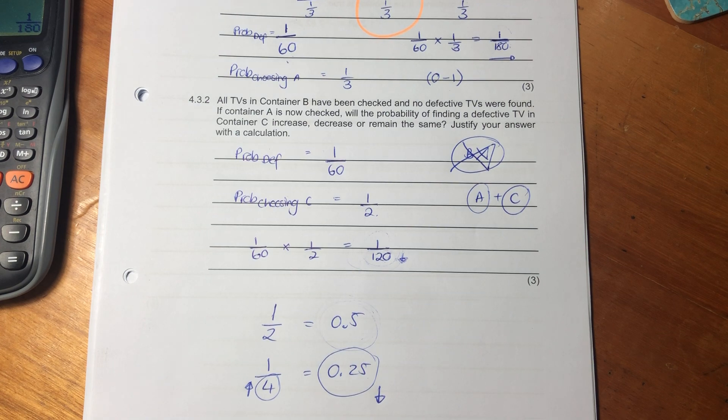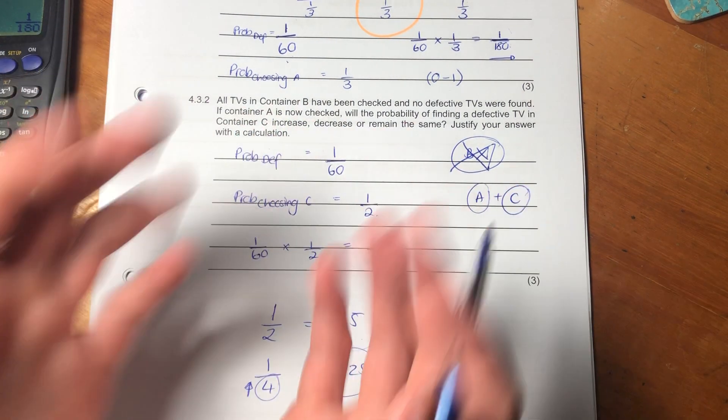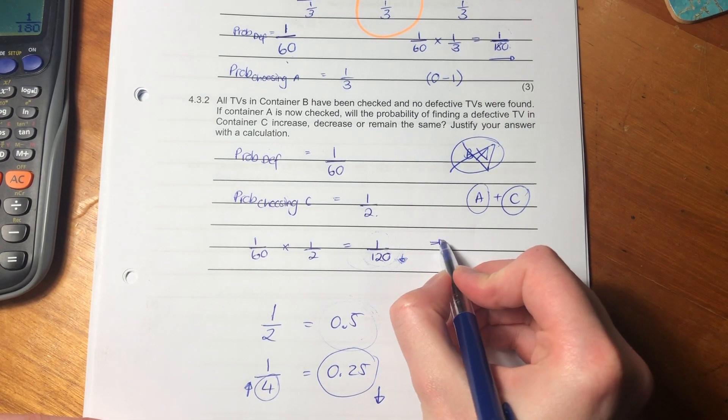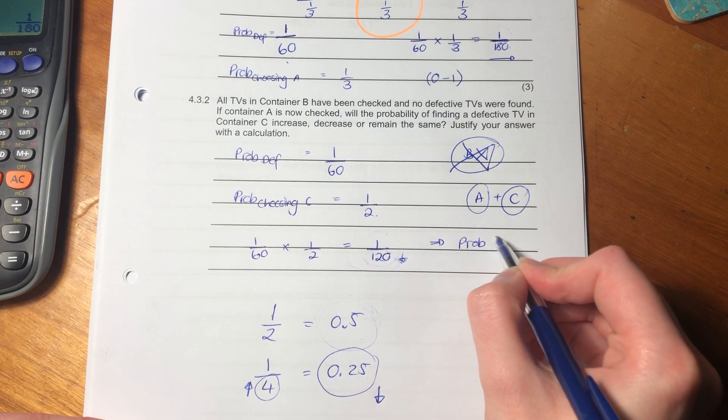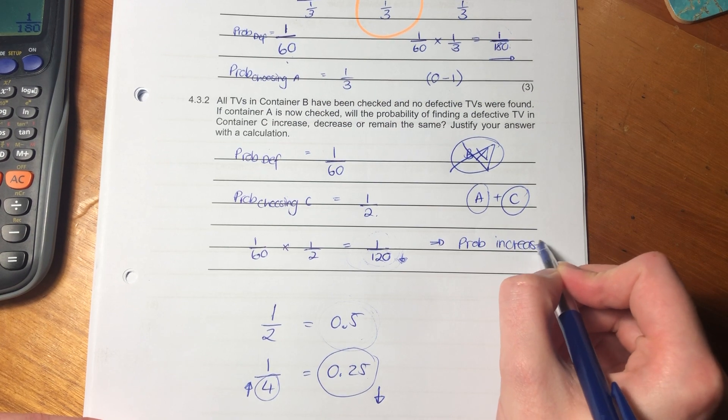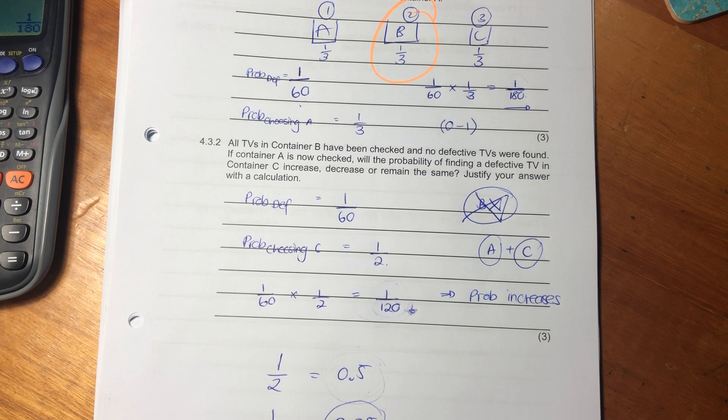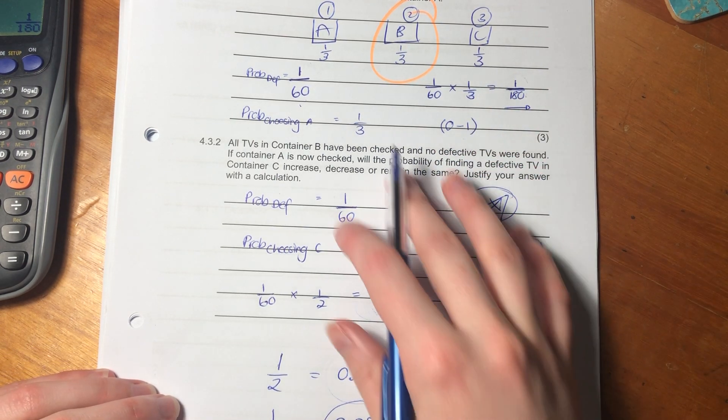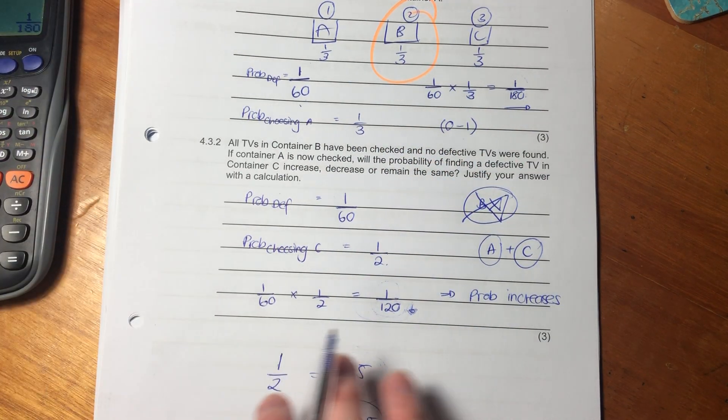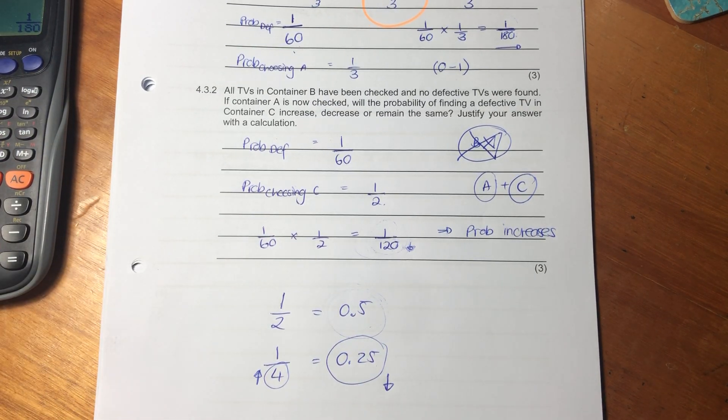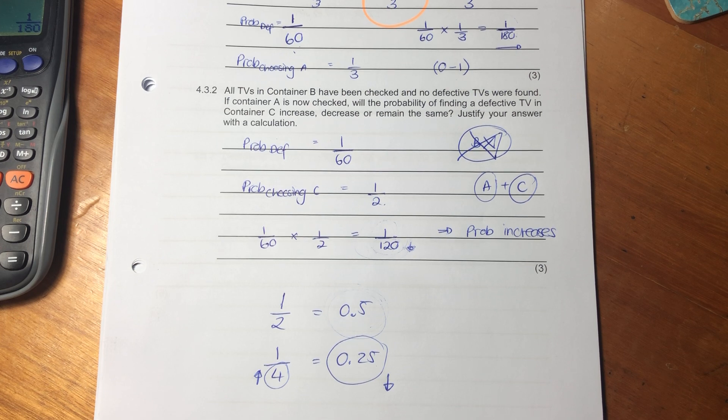Therefore, we say the probability increases, that you will find something defective in container C. So you can say probability increases. So this is sometimes quite a difficult one to wrap your head around, but again, that's why I say try to visualize it, try to draw it, use colors if you want to, and think about the relationships that you're actually trying to represent. I hope that was helpful. We're now going to move on to our very last question for this paper.